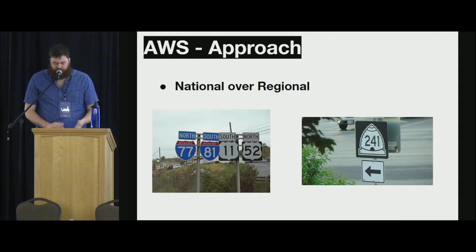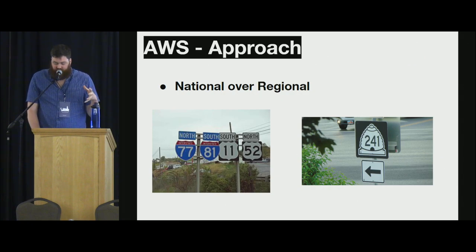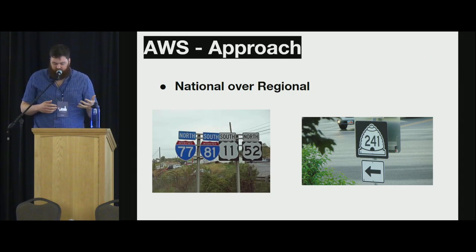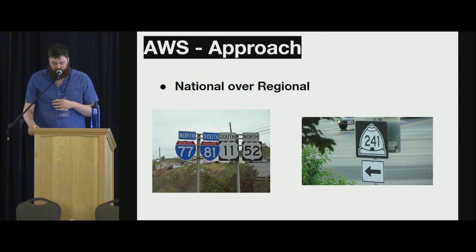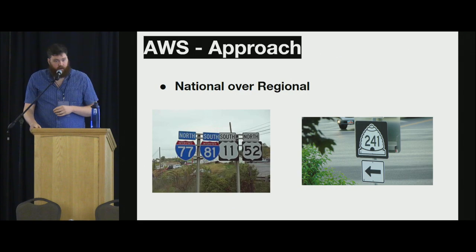These highway shields can range on their admin values from international, national, regional, and sub-regional. Sometimes they're unique shields, and sometimes they're not. On the left we've got the interstate shields and state highway shields used across multiple states, and on the right is the unique state shield for Utah, only within Utah. For time, budget, and effort, we focused on the international, national, and regional shields that could cover more area, rather than local unique state shields.